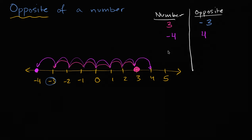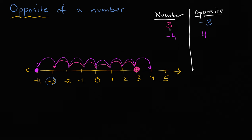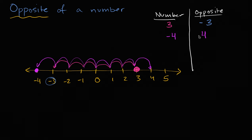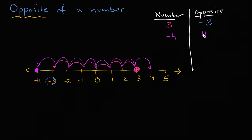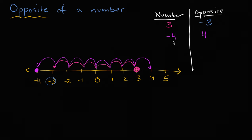The opposite of a number is going to be the opposite sign of that number. If you have a positive three, its opposite is going to be negative three. If you start with negative four, its opposite is going to be positive four. So one way to think about it: it's going to have the same absolute value, but a different sign. Or another way to think about it: if a number is three to the right of zero, its opposite is three to the left of zero, and if the number is four to the left of zero, its opposite is four to the right of zero.